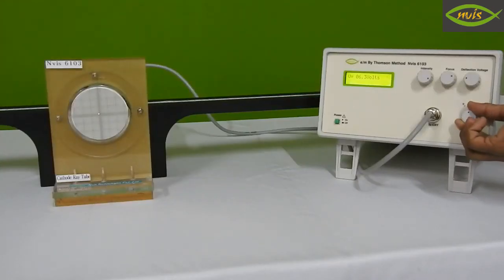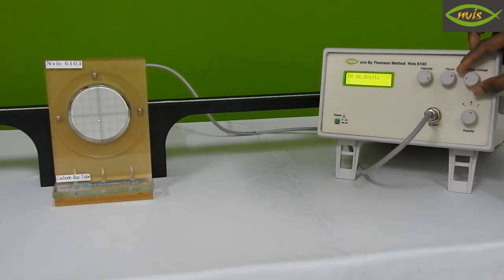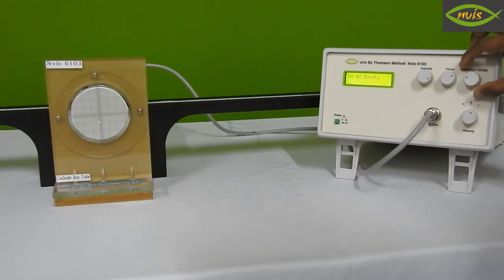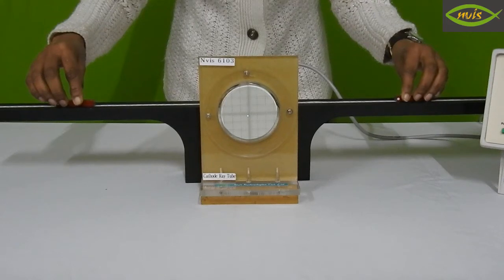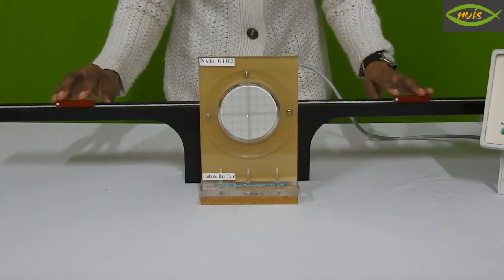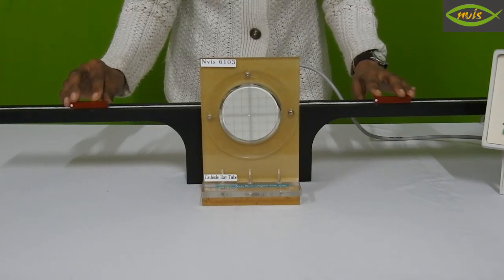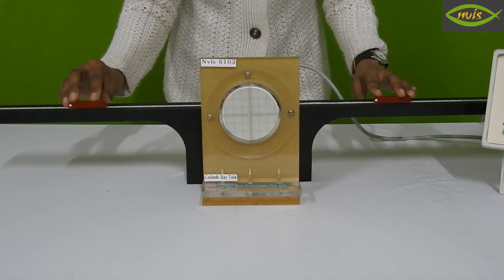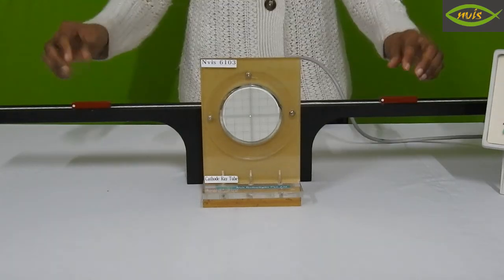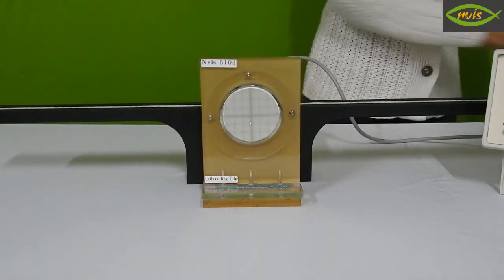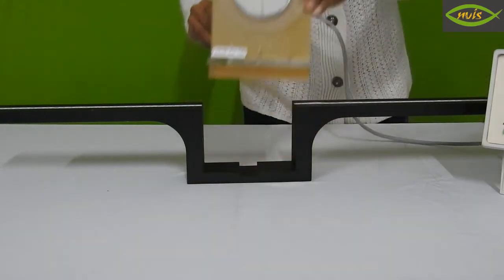Select minus position from polarity switch. Apply DC voltage to deflect the spot 1 cm away in downward direction. Note deflection voltage as V2 and deflection as Y. Place bar magnets again and adjust the position of magnets to bring spot back to original position. Now note the distance of the magnets as R3 and R4. Remove magnets and cathode ray tube.